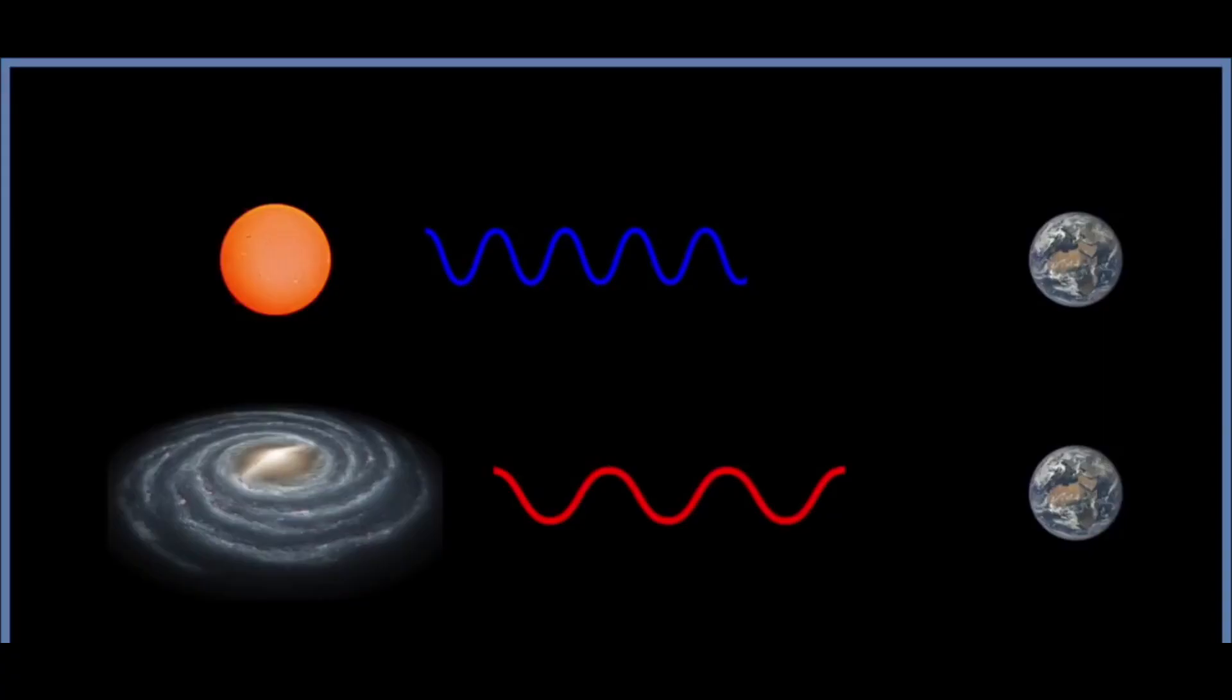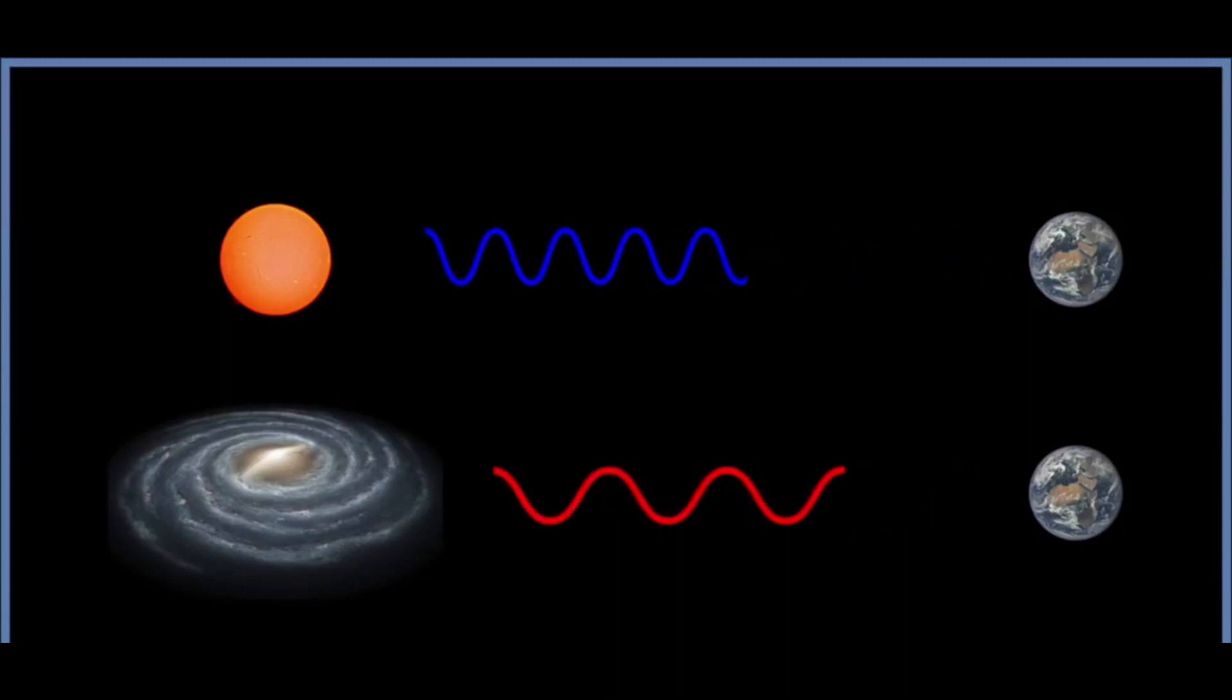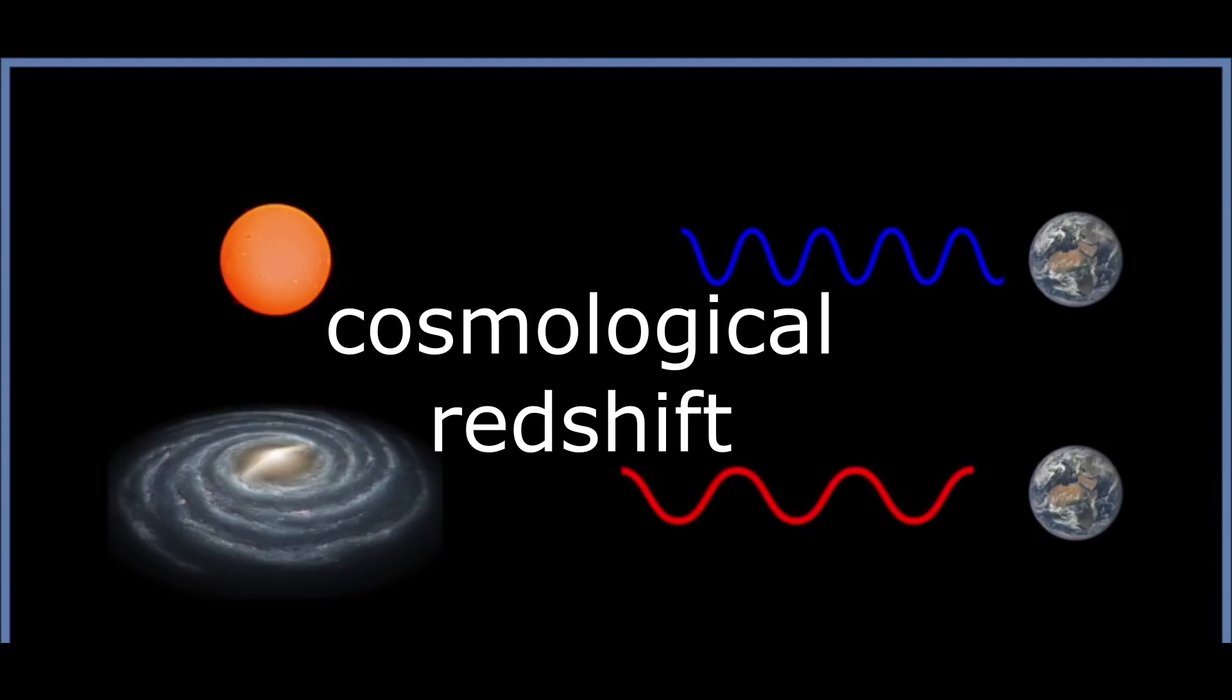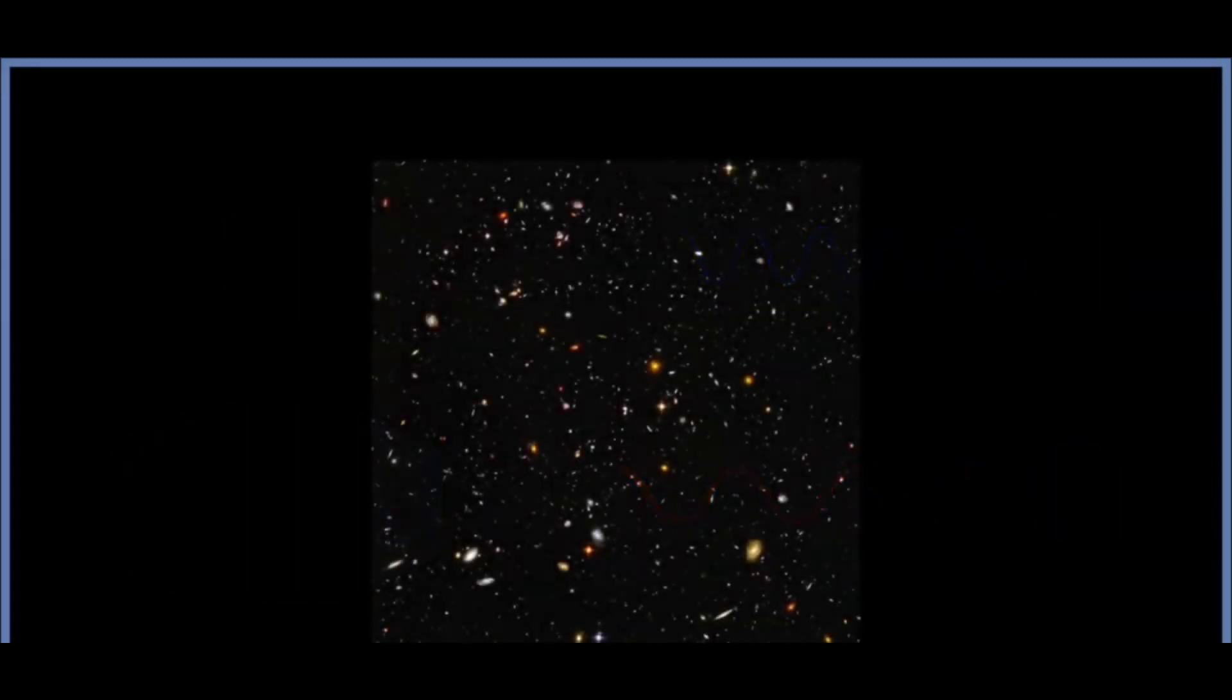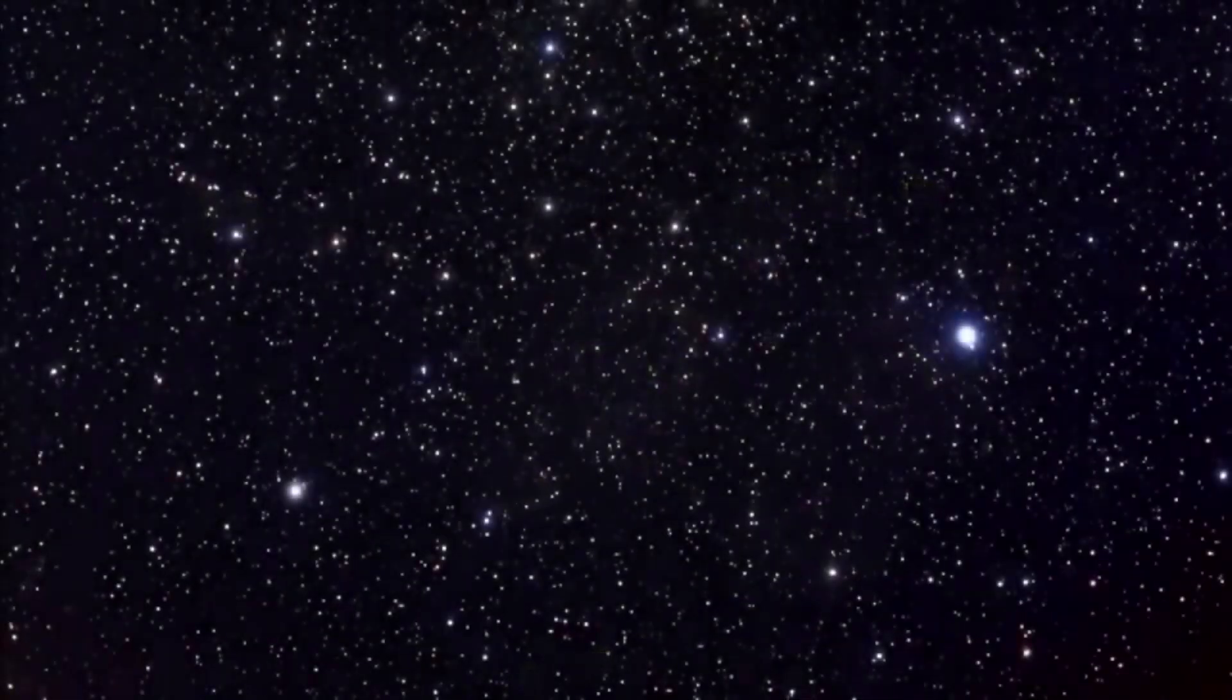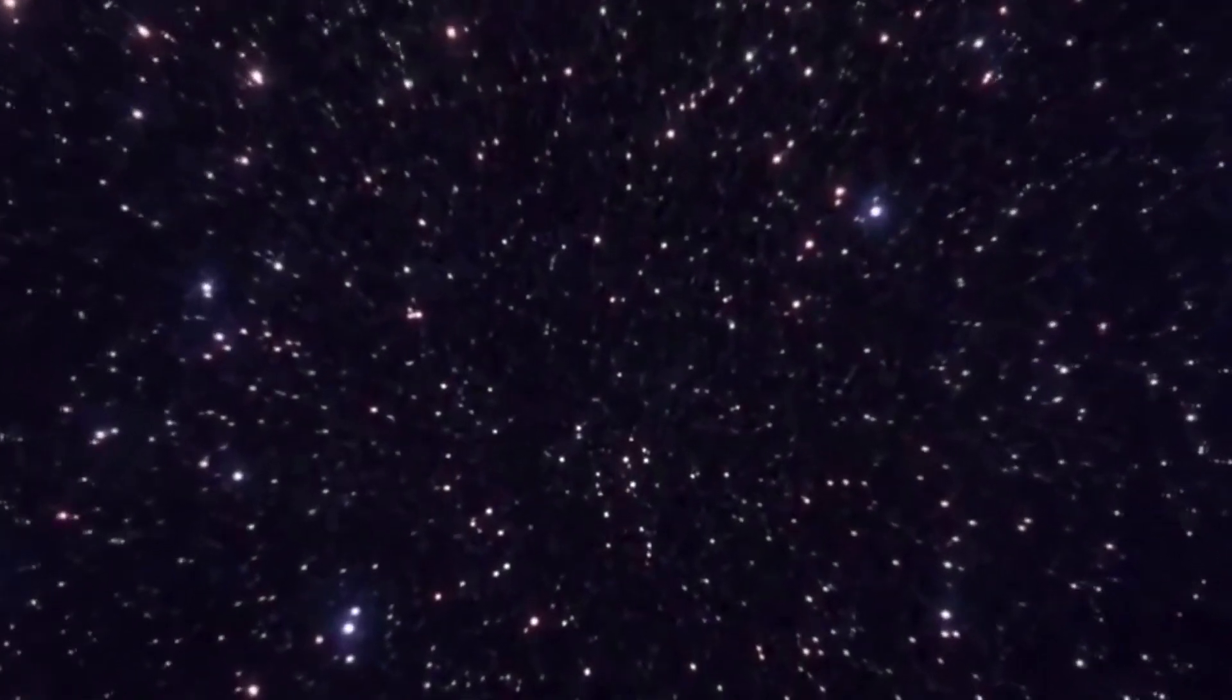The light from these very distant objects has been stretched by the expansion of space. This is known as cosmological redshift. The further the light has to travel, the more it is redshifted. In fact, the visible light emitted at the early universe is stretched so dramatically that it is shifted out into the infrared when it arrives to us.